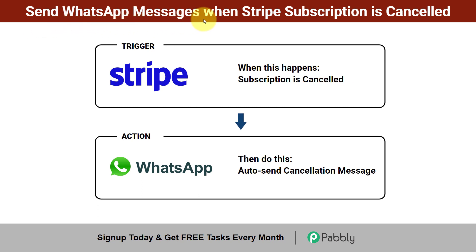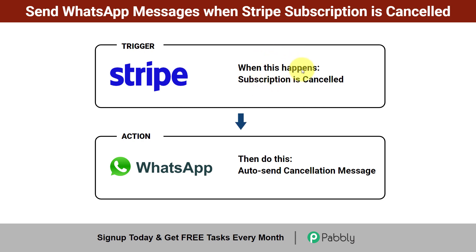In this video, I will show you that whenever the subscription of any customer is cancelled in the Stripe payment gateway, how you can automatically send a cancellation message to that customer informing them that the subscription has been cancelled and the reason for it. If you also want to start sending automatic cancellation messages to the WhatsApp number of the person right after the subscription cancellation, then come with me and I will show you the whole process step by step.